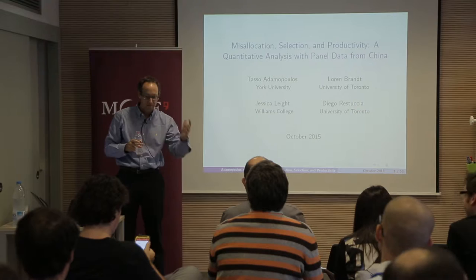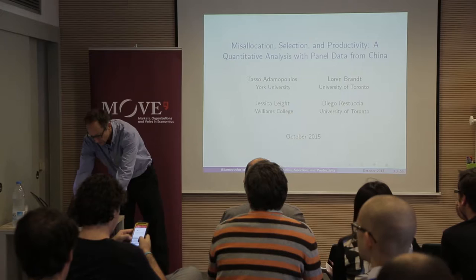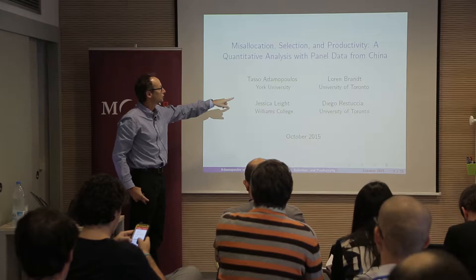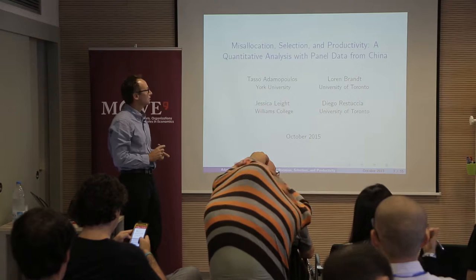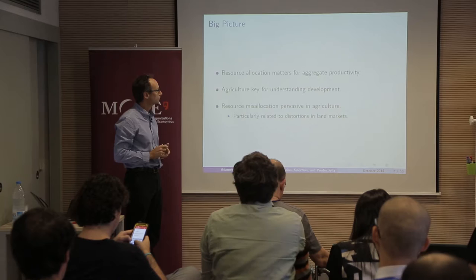Thanks very much for the invitation and thanks for being here on a Saturday. This is joint work with Tasso Domopoulos at York University in Toronto, my colleague Lauren Brandt in Toronto, and Jessica Light at Williams. This paper is about misallocation in the agricultural sector and selection and productivity. We're going to use data for China.